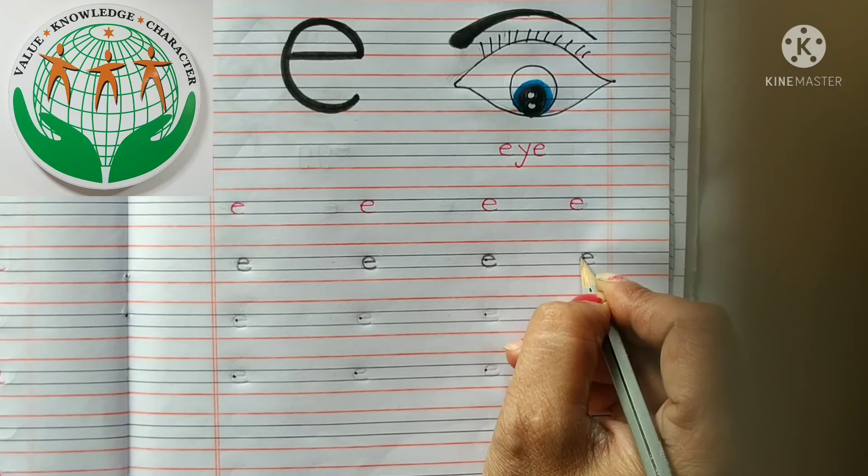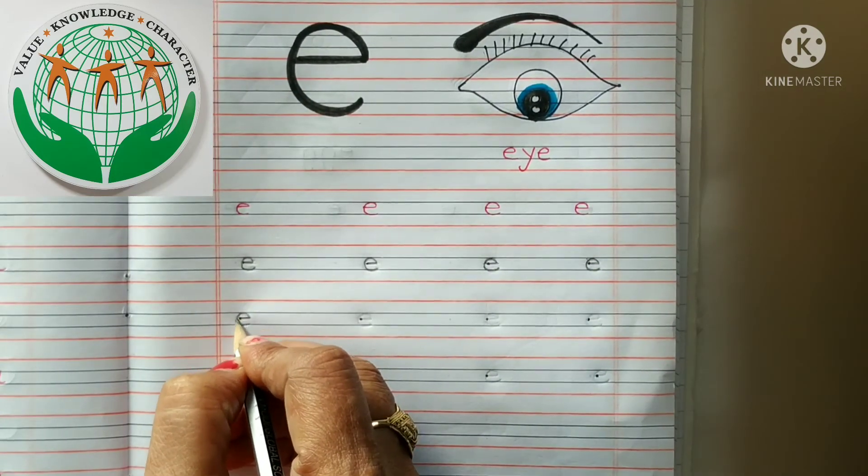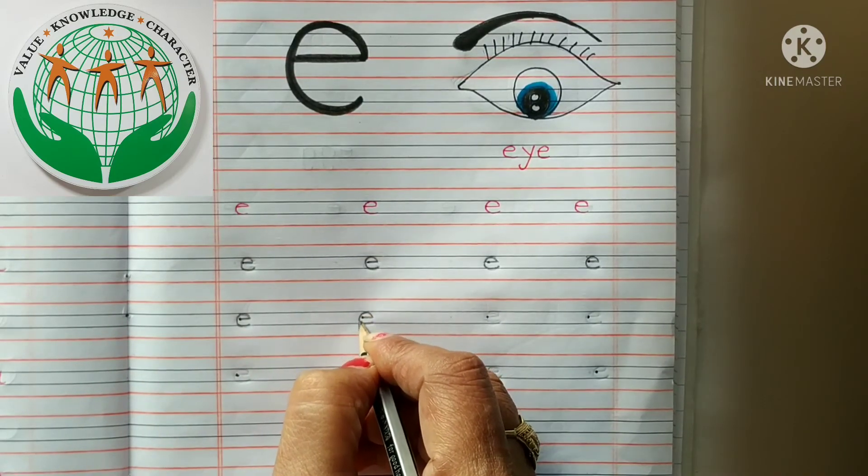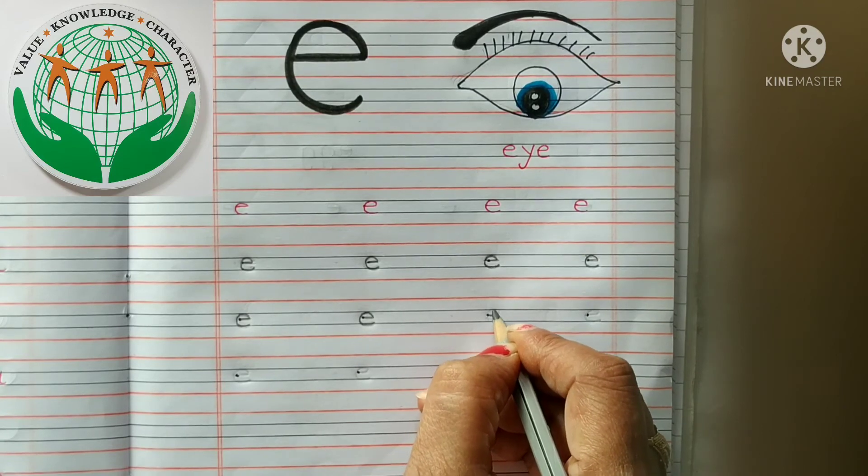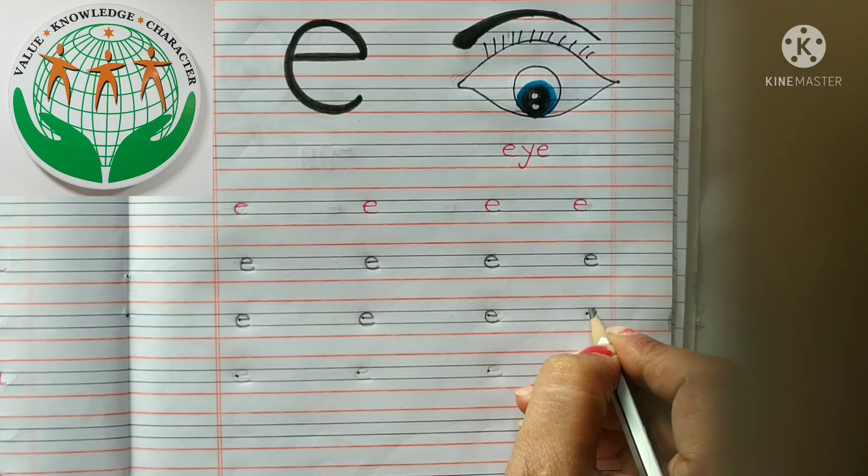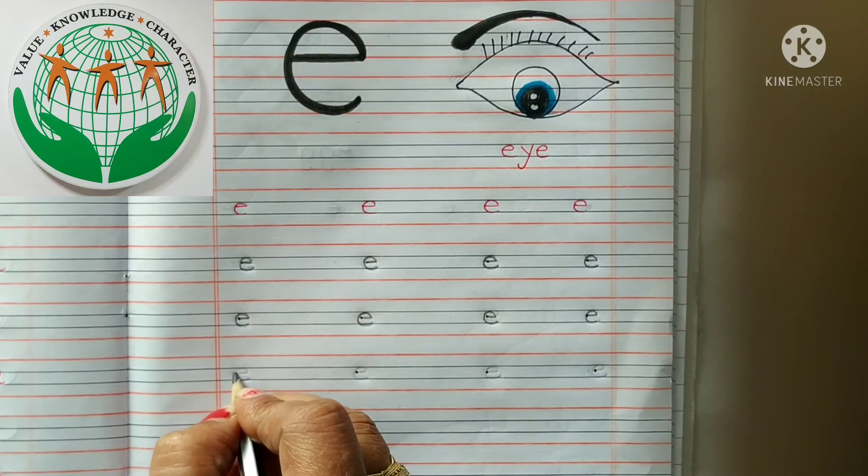E for eye. I have two eyes. E for elephant. E for egg. E for eagle.